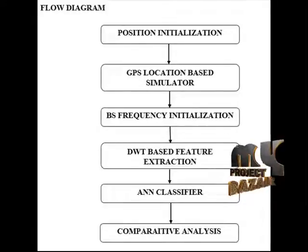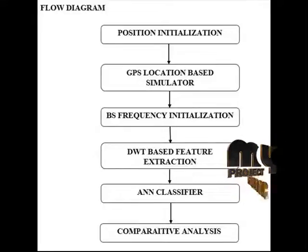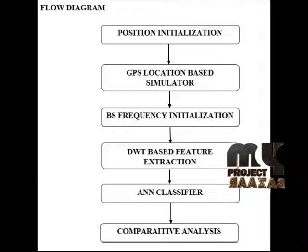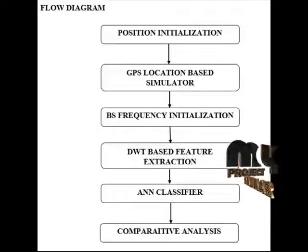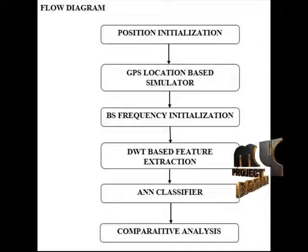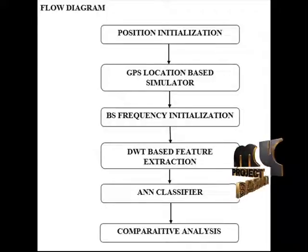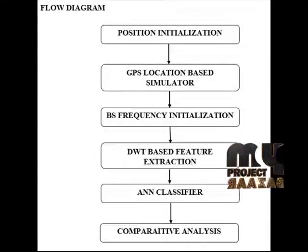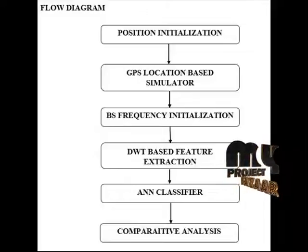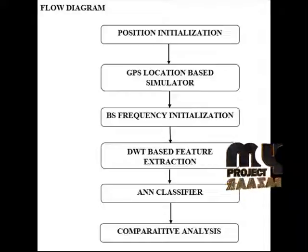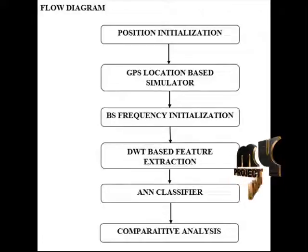Base station frequency initialization: this block shows the initialization of two frequencies. The base station operates in the 95 to 100 GHz range, and the frequency of the signal received at the base station is 1 to 5 GHz, which is also initialized in this block. Next is DWT-based feature extraction.